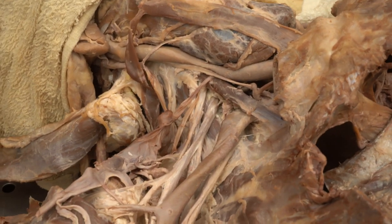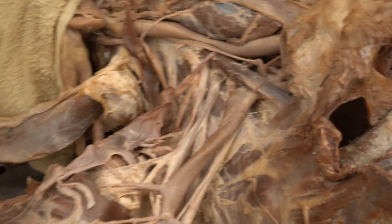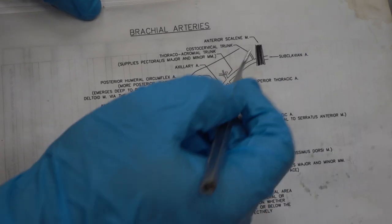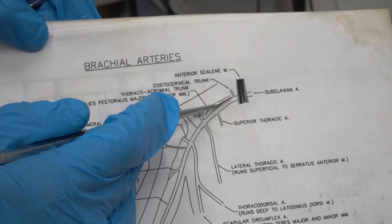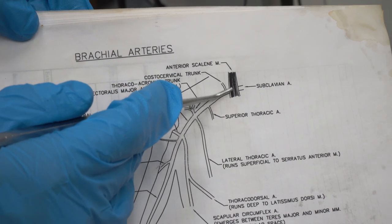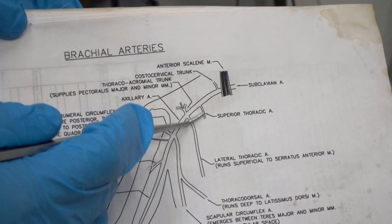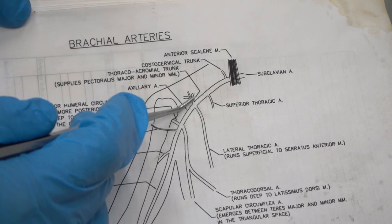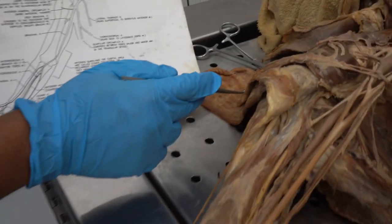The first branch points we want to identify are coming off the subclavian artery. I'd highly suggest bringing this printout and following along with the video. The first two are: costocervical trunk, and then right lateral to the anterior scalene. The next one is superior thoracic artery. After that, I'll show you the thoracoacromial trunk, which supplies your major muscles — pectoralis major and minor. We'll identify those three on the cadaver first.